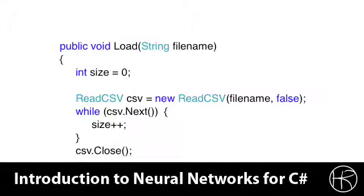Make sure you download the one from the class because I did extend the read CSV file just slightly for the class. Here we pass in two parameters, the file name and false. False means that there are no headers on the CSV file. Because remember, the CSV file was just raw data. And we loop over every line in the file and we increment the size variable. This counts the number of lines in the CSV file.